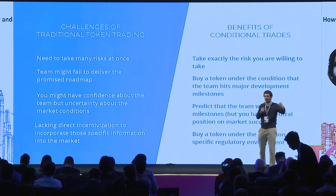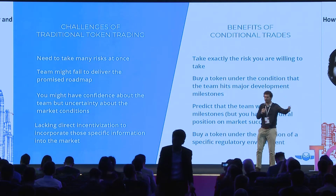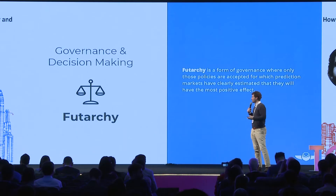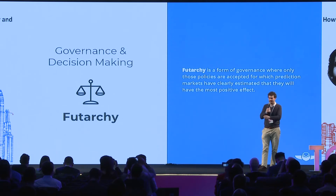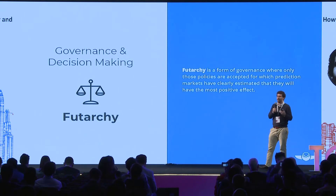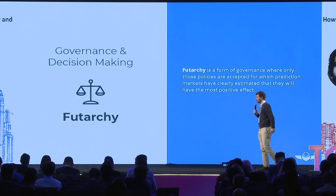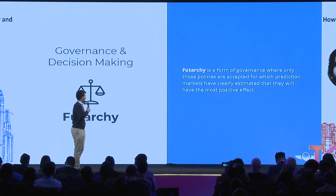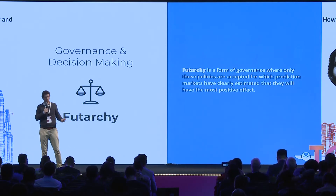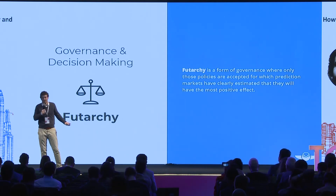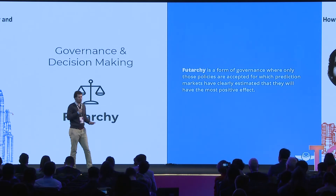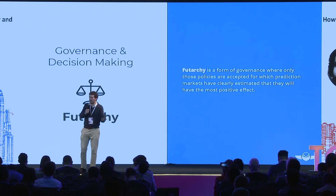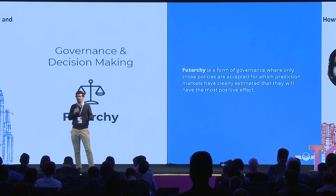What I just described is an observing market — you value future events conditionally. We can go a step further. This concept is called futarchy, invented by Robin Hanson, who is also an advisor to us. It is about using prediction markets to actually make decisions in a decentralized way. With decision making, you usually have a problem: either a limited set of participants can make a decision, potentially missing knowledge that exists elsewhere.